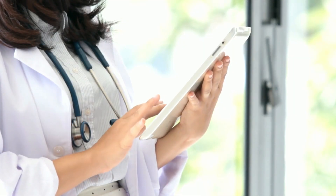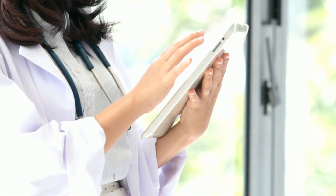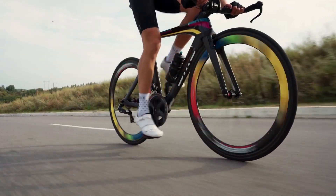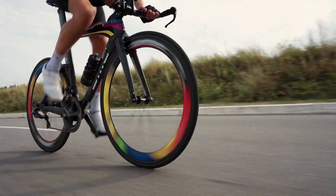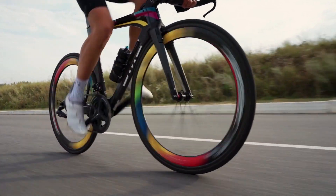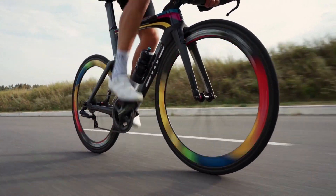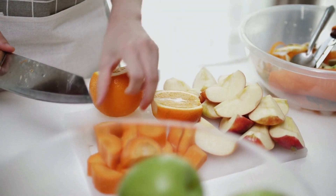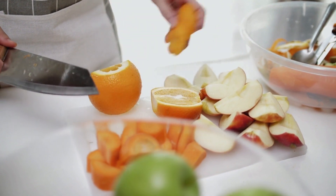Your patient is visiting for her yearly physical exam. You review your patient's file and take a look: age 60, female, with chief complaints of low energy, shortness of breath, and dizziness when exercising. Your patient lives a very active and healthy lifestyle — she is part of a bike club and rides 50 miles or more each week and has a healthy diet. In past checkups, you noted that she had low cholesterol and a low resting heart rate due to her healthy and active lifestyle.